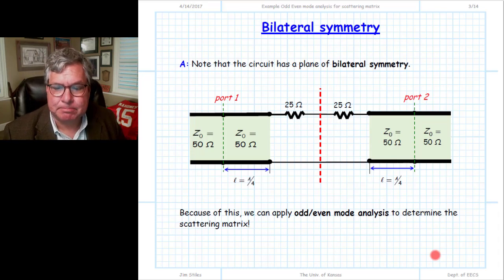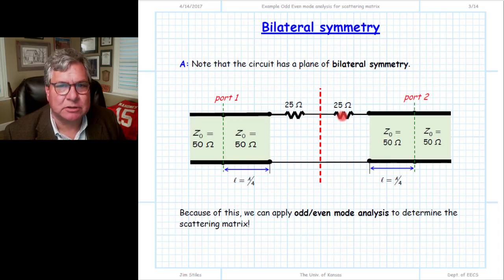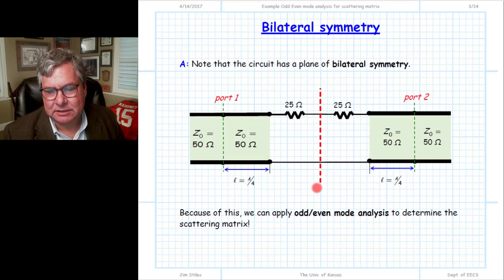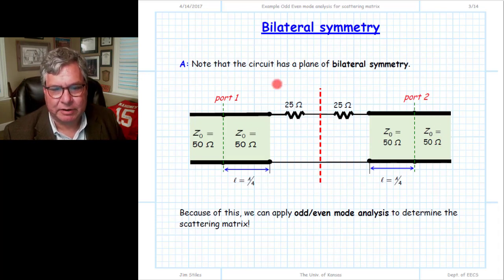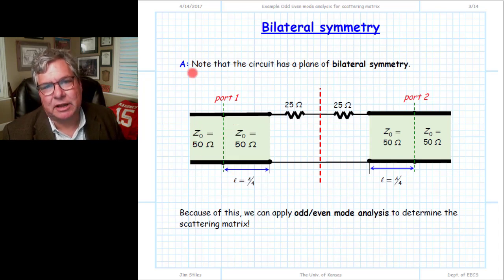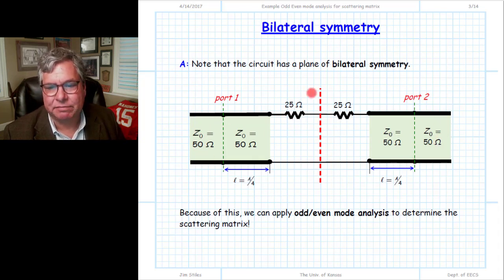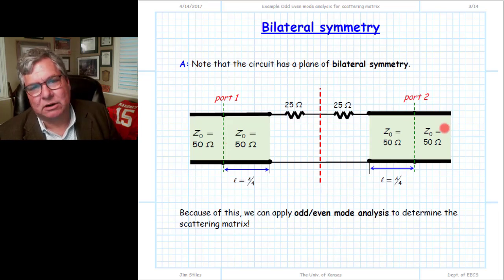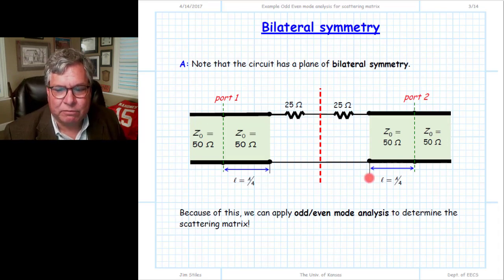This circuit does exhibit bilateral symmetry. It's more easily seen if we break the 50 ohm resistor into two 25 ohm resistors in series and draw a line that bisects them. We can see a plane of bilateral symmetry - reflecting across this plane gives the same circuit. We have a 50 ohm transmission line connected to port one and one connected to port two, so not only is the circuit itself symmetric, but the transmission lines we connect to each port are symmetric as well. Both things must be true to apply even-odd mode analysis.